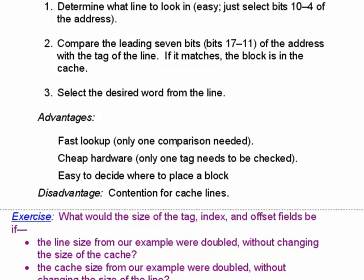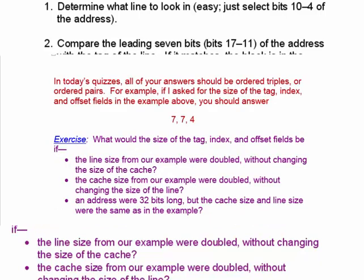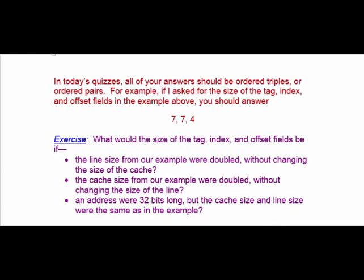Next time, we'll talk about a different cache structure. In today's quizzes, all answers should be given as ordered triples, or as ordered pairs if only two numbers are called for. For example, if asked for the size of the tag, index, and offset fields in the example above, the answer would be 7, 7, 4.